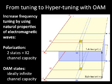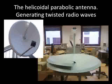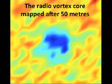This means that we can increase the capacity of each channel, ideally to the infinite. For this reason, we built a helicoidal parabolic antenna to generate twisted radio waves, and this is the radio vortex core generated by this particular antenna, mapped after 50 meters of propagation.